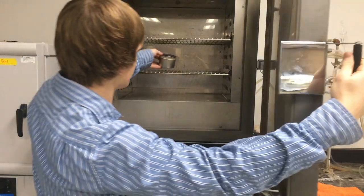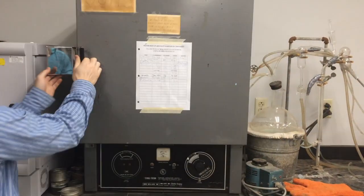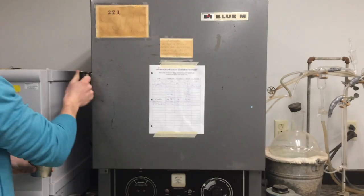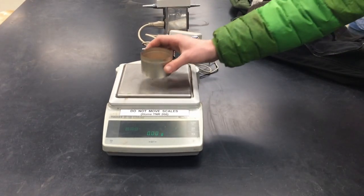Place the tin in a 105 degree oven for 24 hours in order to dry the soil. After drying, weigh the tin and record the mass.